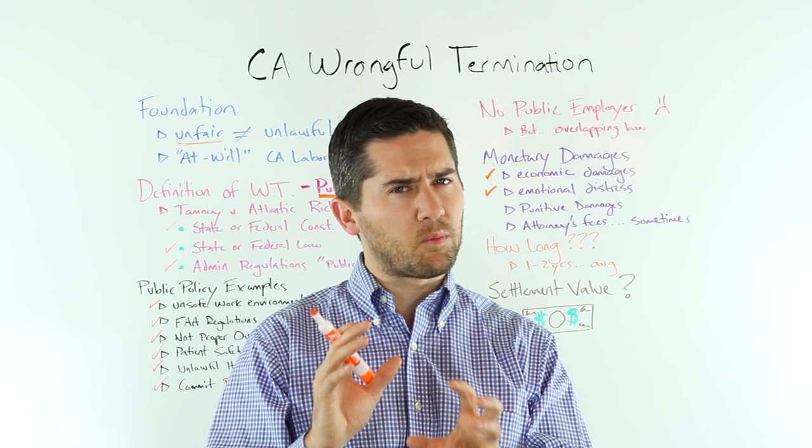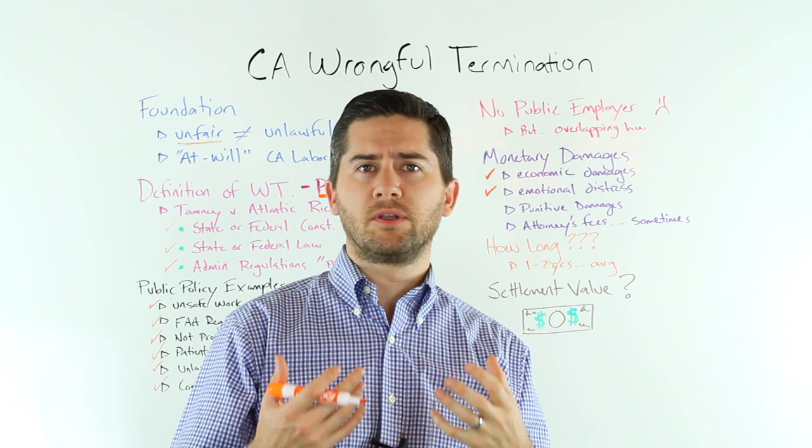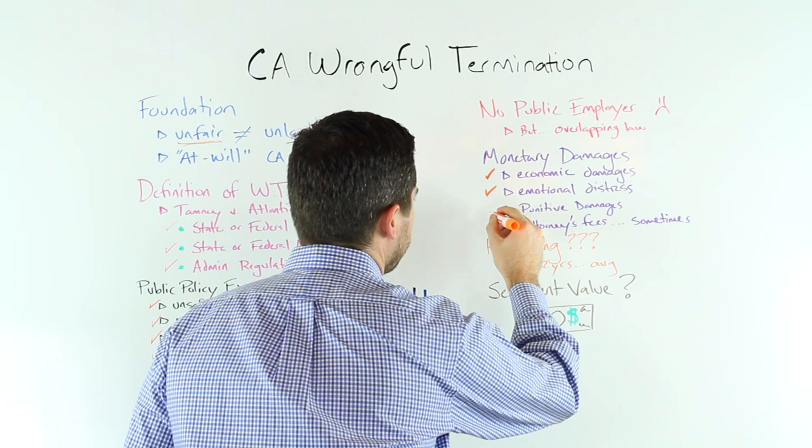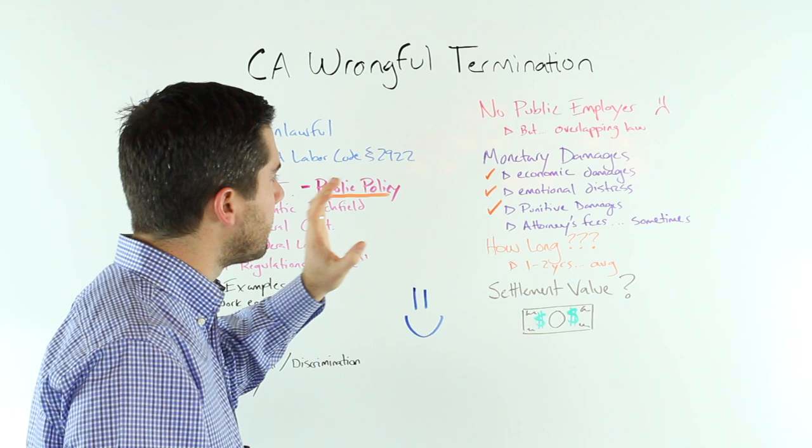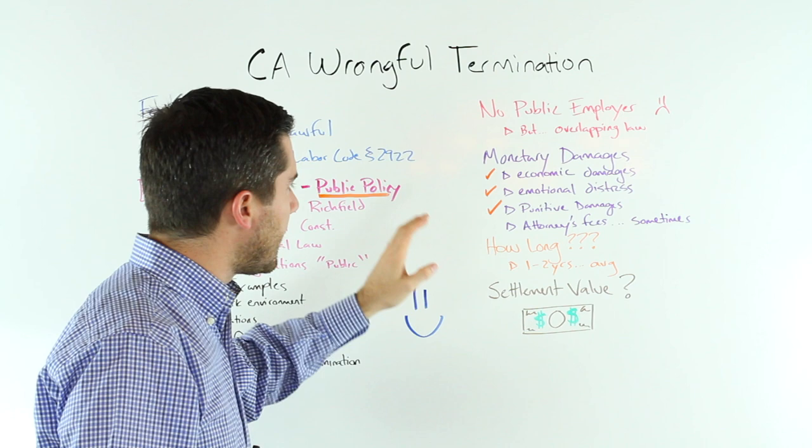Third, punitive damages. Punitive damages—everybody knows about punitive damages. Those are the damages meant to punish the employer for the horrendous conduct. But they're difficult to win because you have to prove that the termination was done with malice, oppression, or fraud, which has a higher burden of proof—very difficult to do. But if you have a good lawyer, good lawyers can ring that bell far more often than others.